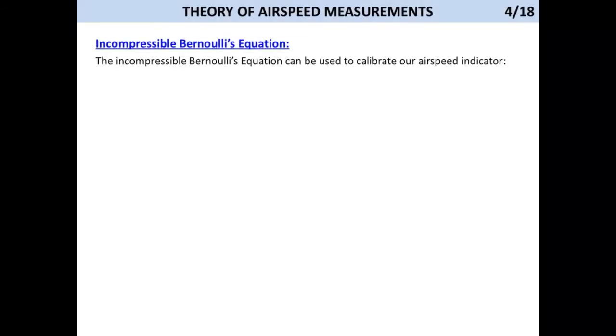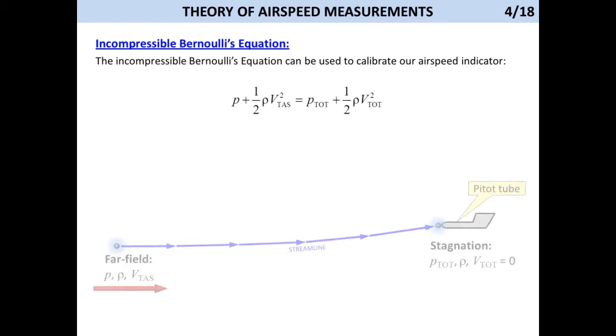Also note that the pressure and density are the far field values, which simply means they are measured far enough away from the airplane not to be affected by its own pressure field. It is of importance to recognize that the incompressible Bernoulli equation can be used to calibrate our airspeed indicator. To do this, we write the equation for two points in the flow.